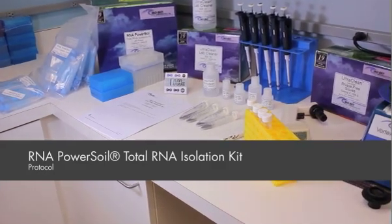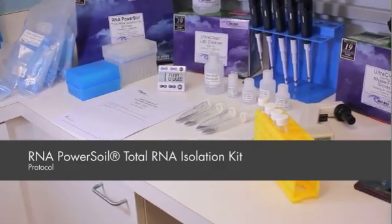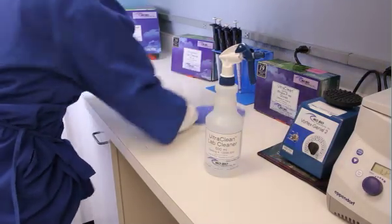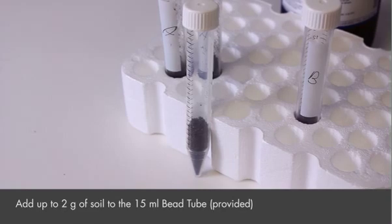This is a visual protocol for MoBio's Power Soil Total RNA Isolation Kit. Always work in a clean area to avoid contamination and RNA degradation. Add up to 2 grams of soil to the provided 15 ml bead tube.